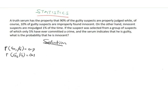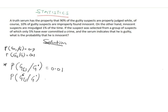In the second part, innocent suspects are misjudged 1% of the time. So the probability that the truth serum says guilty given that the person is innocent is 0.01. The probability of the truth serum correctly saying innocent given the person is innocent is 1 minus 0.01, which is 0.99.